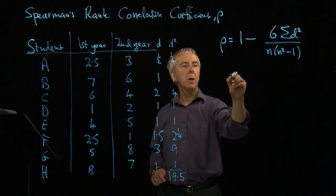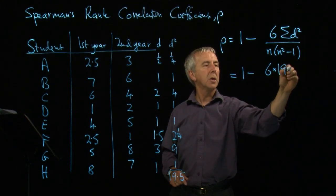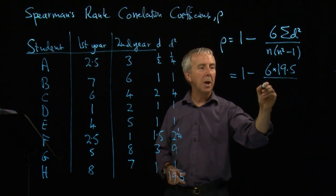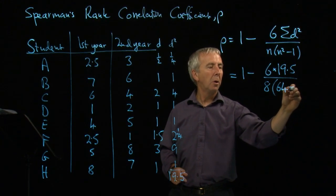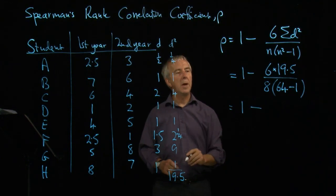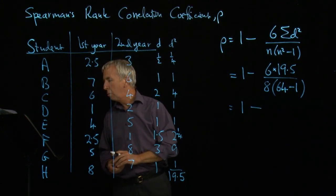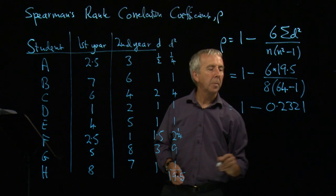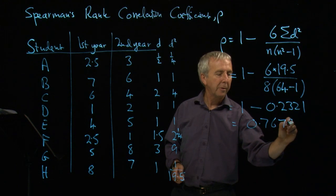We put that in this formula. So we get one, take away six lots of 19 and a half. And then we divide by n, the number of items. We've got eight times n squared. Eight squared is 64. Take away one. So I work all of that out. I get 0.2321. And that gives me a correlation coefficient of 0.7679.